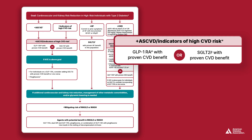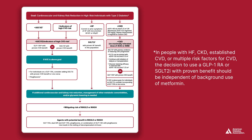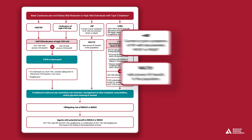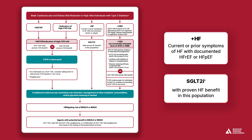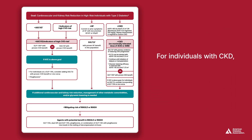If A1C is still above goal, for individuals on a GLP-1 receptor agonist, consider adding an SGLT-2 inhibitor, or vice versa. Pioglitazone may also be considered. The decision to use these agents is independent of background use of metformin. For individuals with heart failure, recommended treatment includes an SGLT-2 inhibitor with proven heart failure benefit.